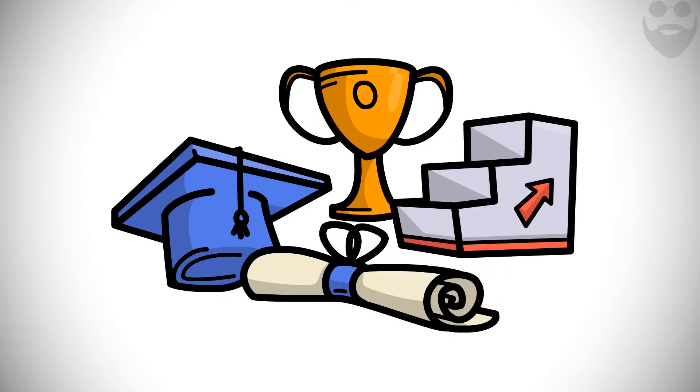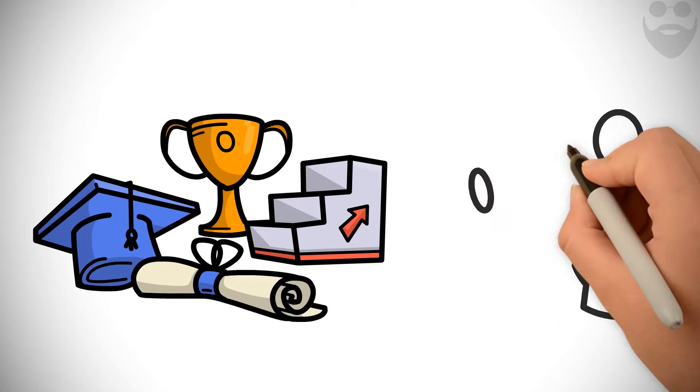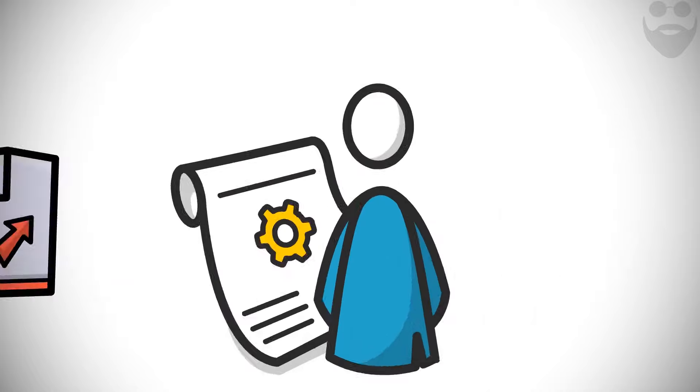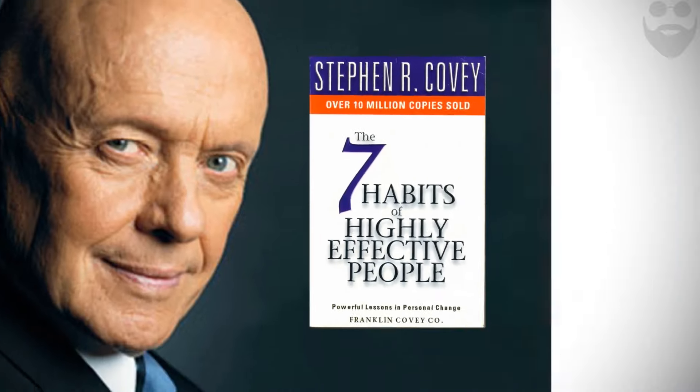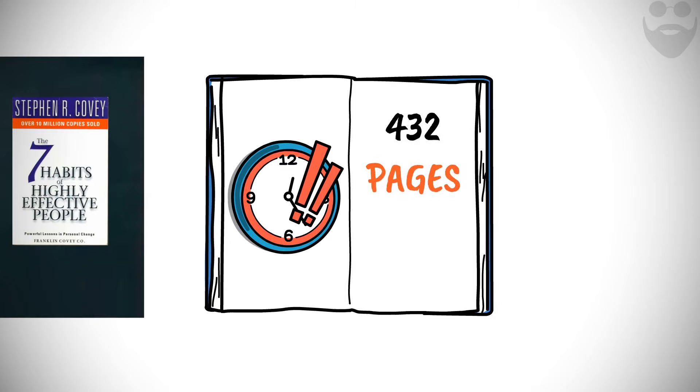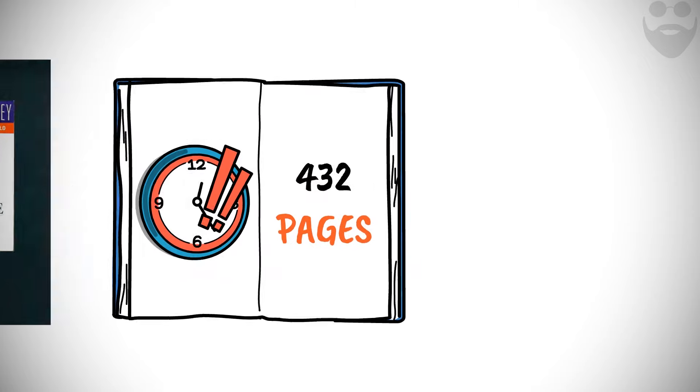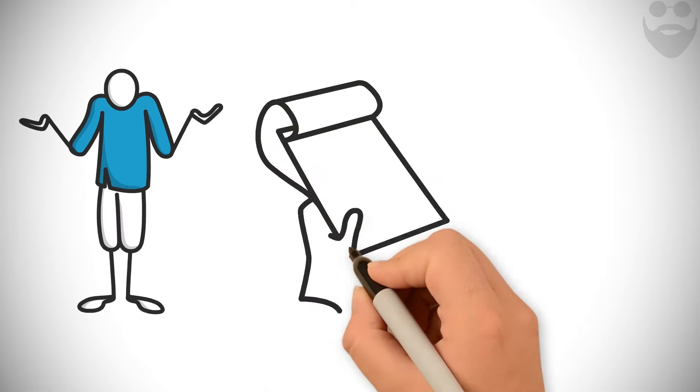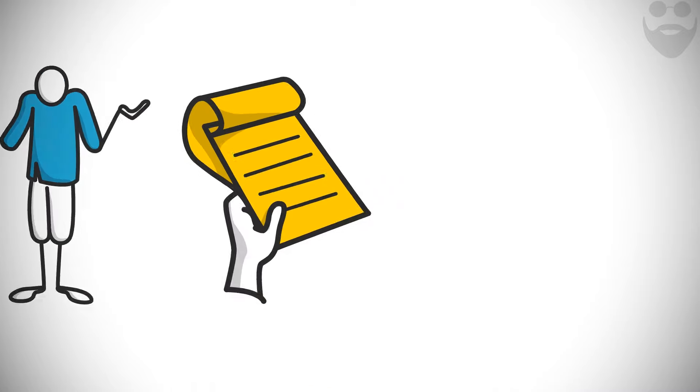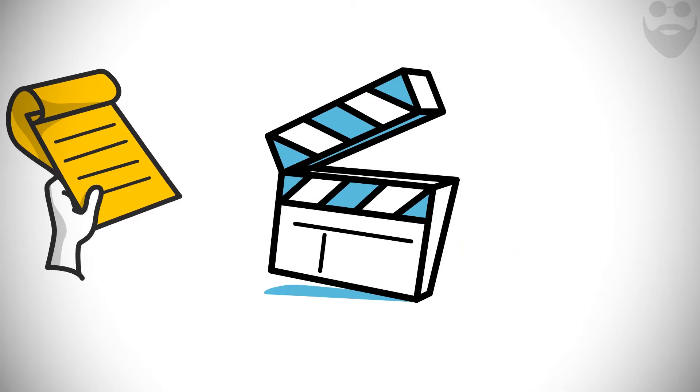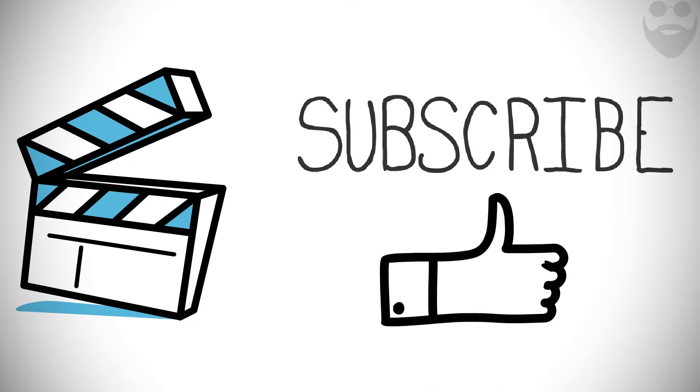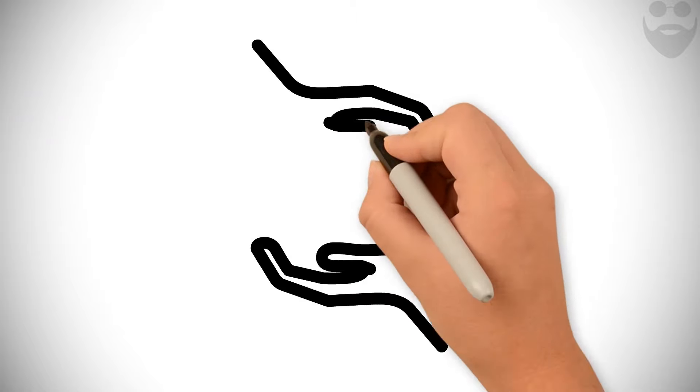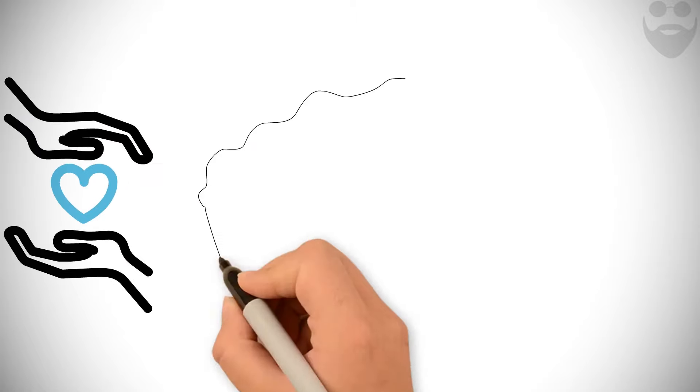We all want to succeed, and one path to success is identifying the habits that can help us on our journey. I recommend starting by reading Stephen Covey's best-selling book, The 7 Habits of Highly Effective People. Don't have time to read all 432 pages? I get it. Most of us don't. That's why we have summarized the entire book for you. If you find this animation helpful, smash the subscribe and like button so we can continue to craft such animations with love and care, especially for you.